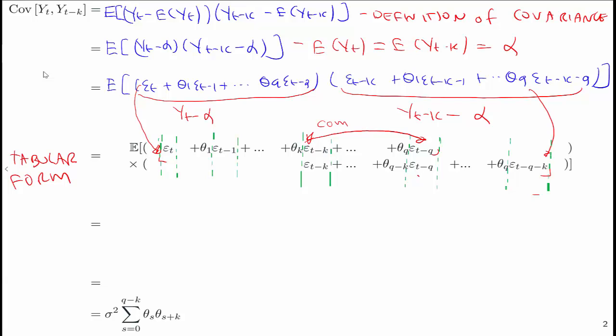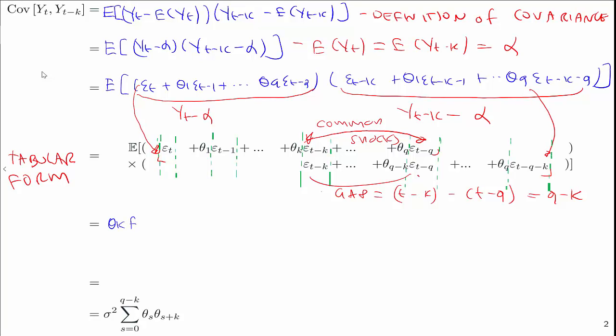These are the only shocks which appear in both yt and yt minus k. And the number of shocks between here, the gap between them, is just q minus k. That's why in the second line for yt minus k, it goes epsilon t minus k plus dot dot dot theta q minus k times epsilon t minus q. For yt minus k, it's the first q minus k shocks which are correlated with the last q minus k shocks of yt.